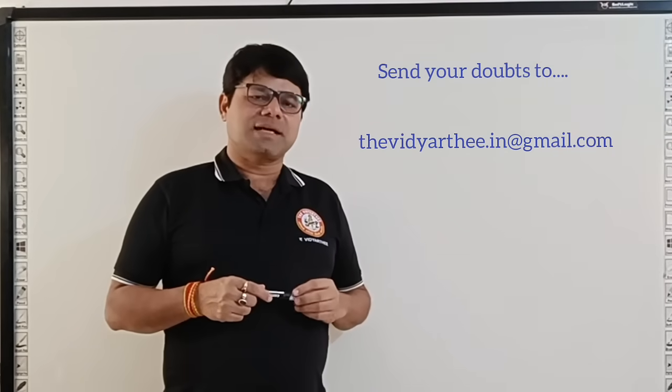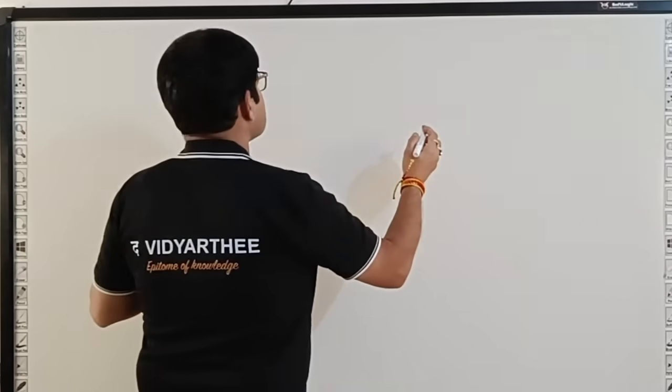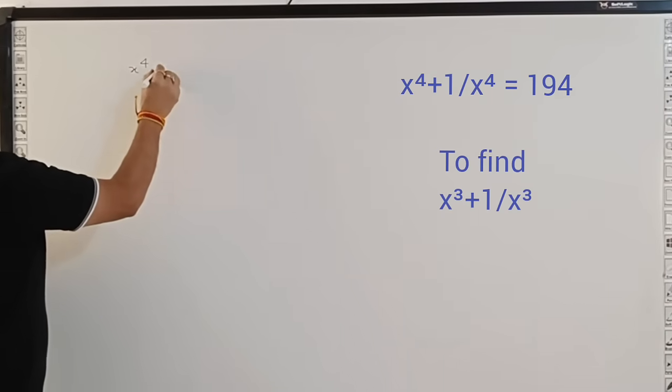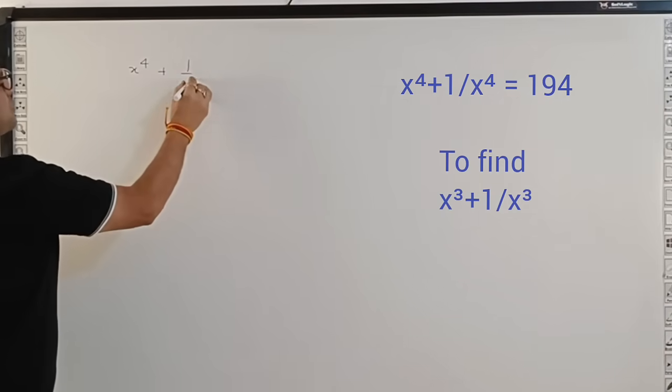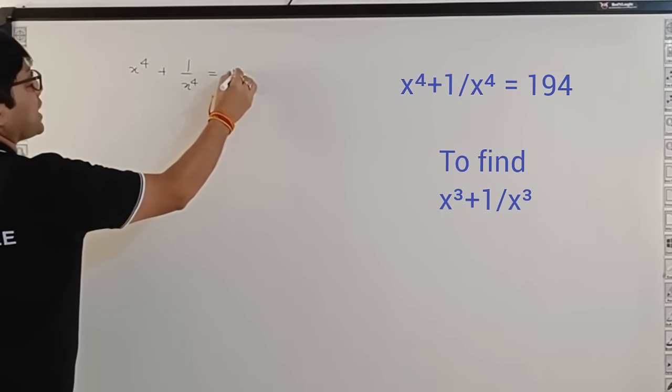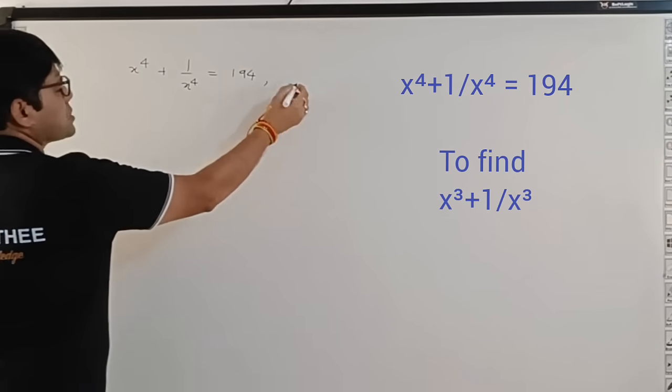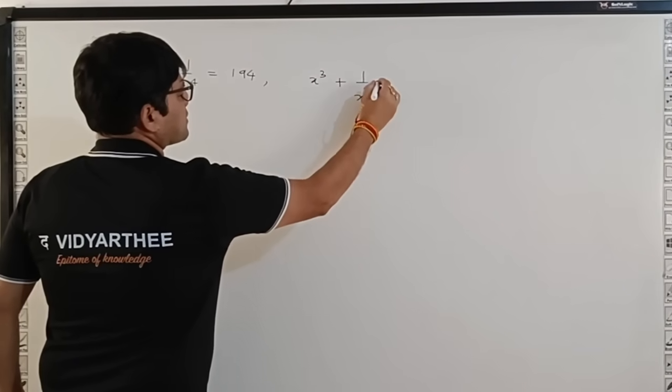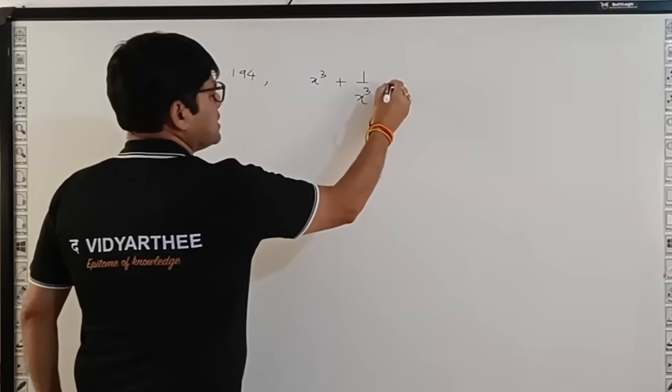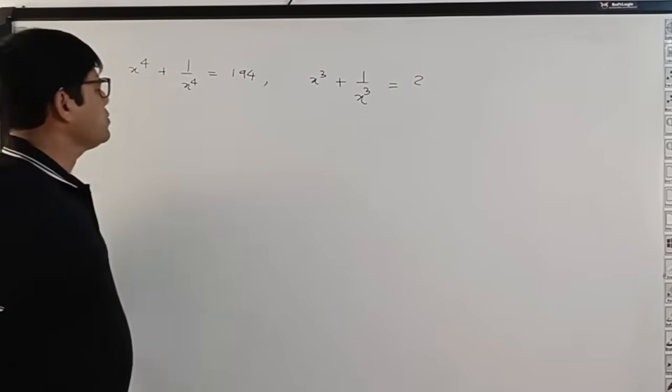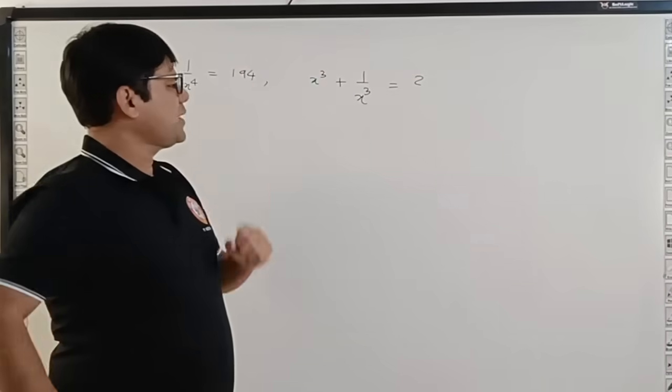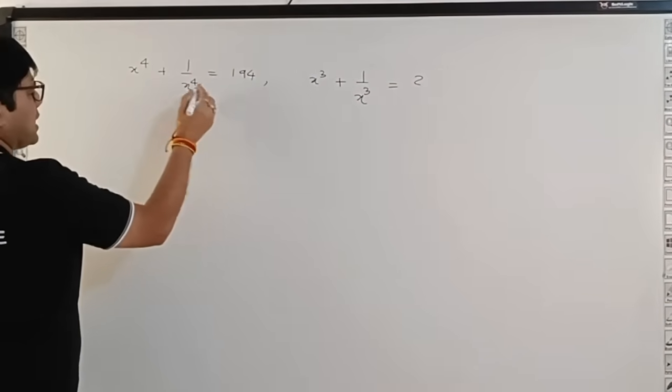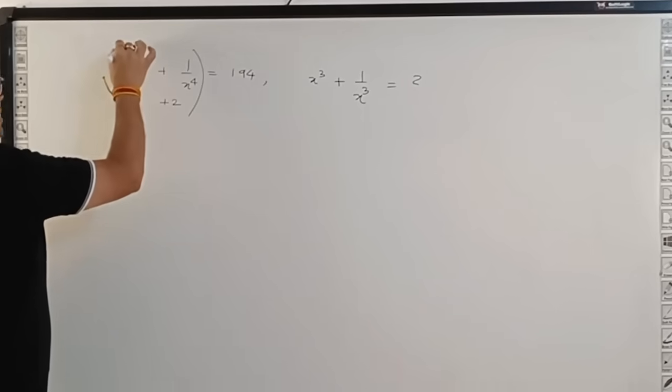Let us start with today's doubt. The first question is: you have x^4 + 1/x^4 = 194. Your question is to find out what is x^3 + 1/x^3. Using this information, you have to find the value of x^3 + 1/x^3. What I have to do is add 2 to both sides in this question.